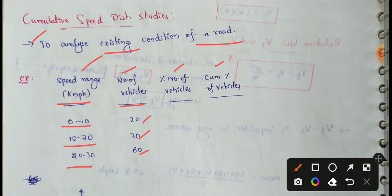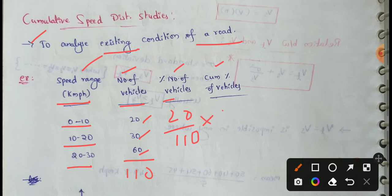The first step is to measure the percentage of number of vehicles. The total number of vehicles is 20 plus 30 plus 60, which equals 110. The percentage of vehicles in the first speed range (0 to 10 km/h) is 20 divided by 110, multiplied by 100, which is approximately 18%.